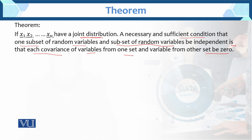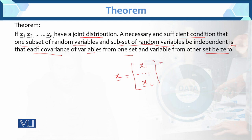Now let me explain this theorem statement a little. This is x1 and this is x2. The necessary and sufficient condition is that one subset — this is the subset — we have total x. x ke subsets ban gaye: x set yeh hai, doosra yeh. This is the subset of the random variable.